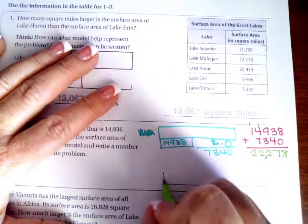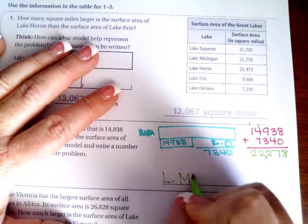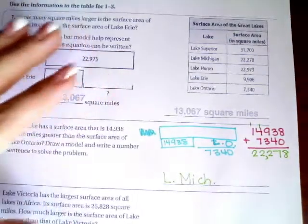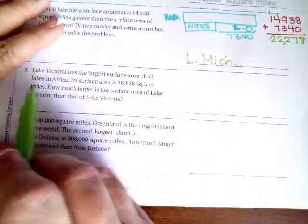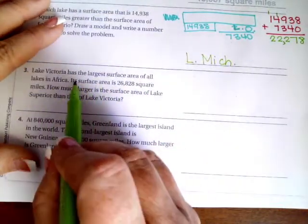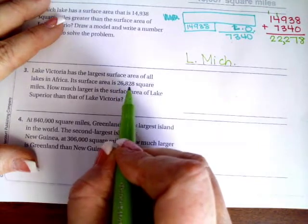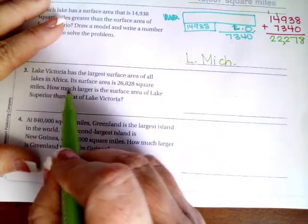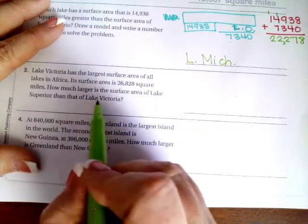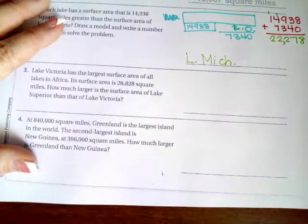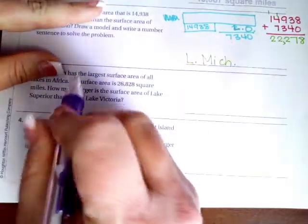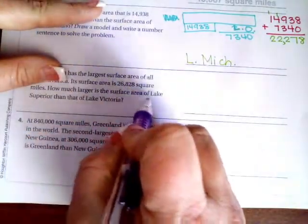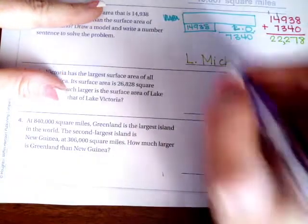Well you can see that that is Lake Michigan. I'm going to look at the next one. It says Lake Victoria has the largest surface area of all lakes in Africa. Its surface area is 26,828 square miles. How much larger is the surface area of Lake Superior than Lake Victoria? So we're going to take Lake Superior because it says that that one is larger.